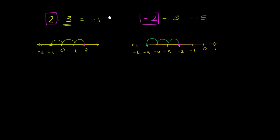So notice, in both situations, we subtracted 3. We moved 3 to the left on the number line. It's just here we started 2 to the right of 0. Here we started 2 to the left of 0. This is negative 2.